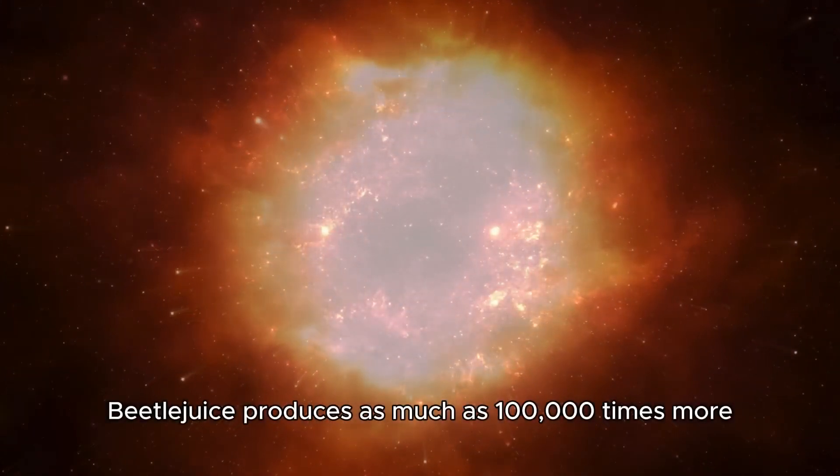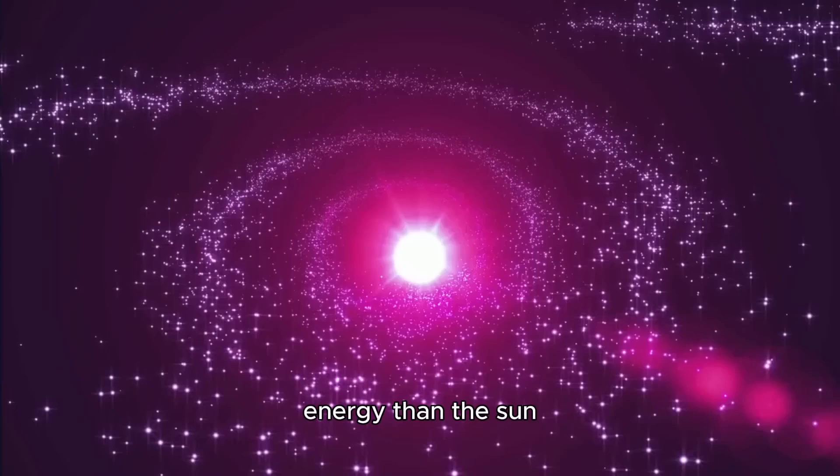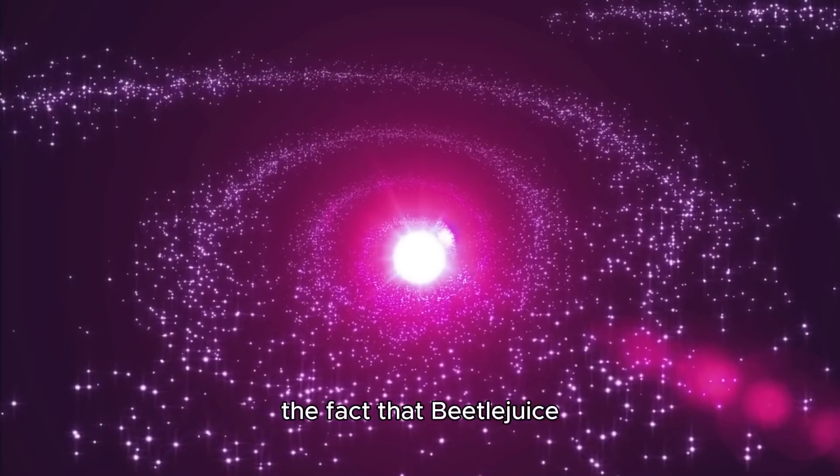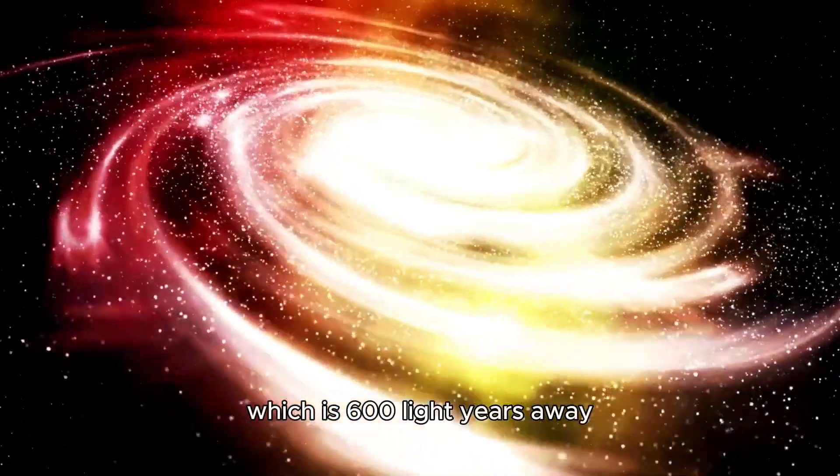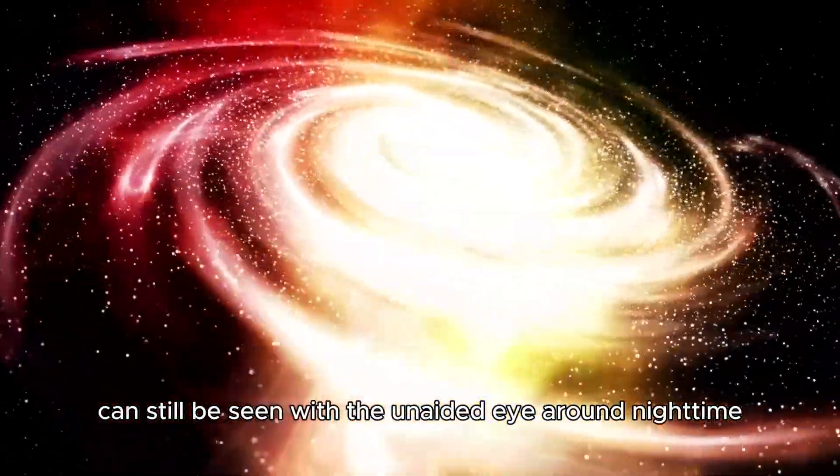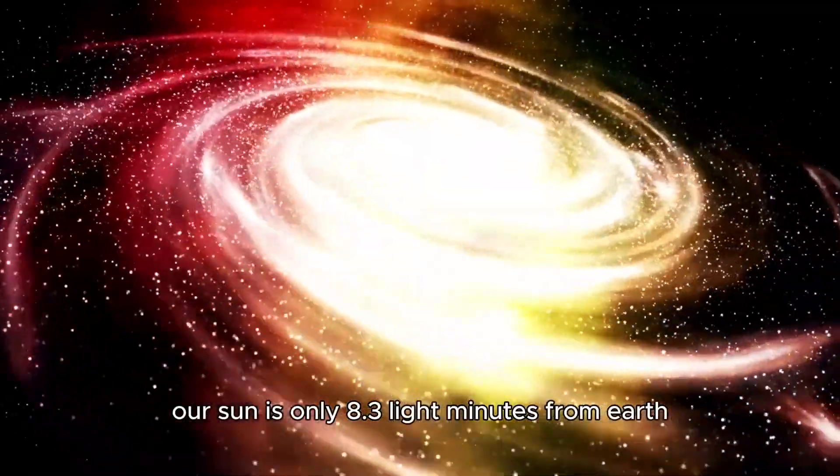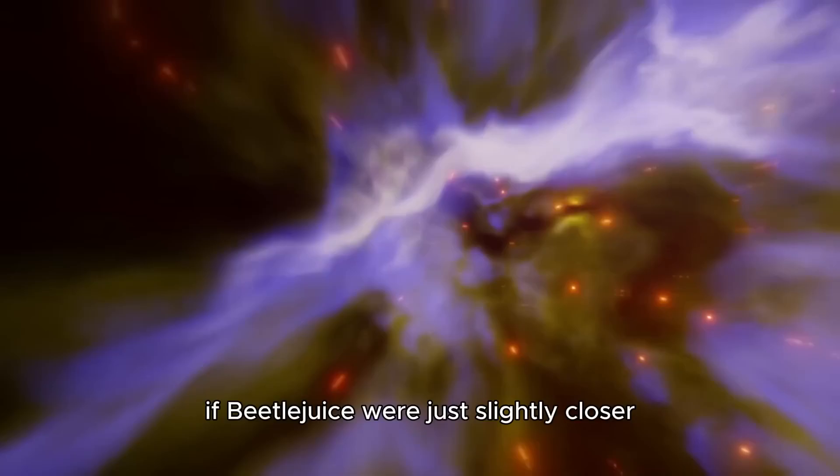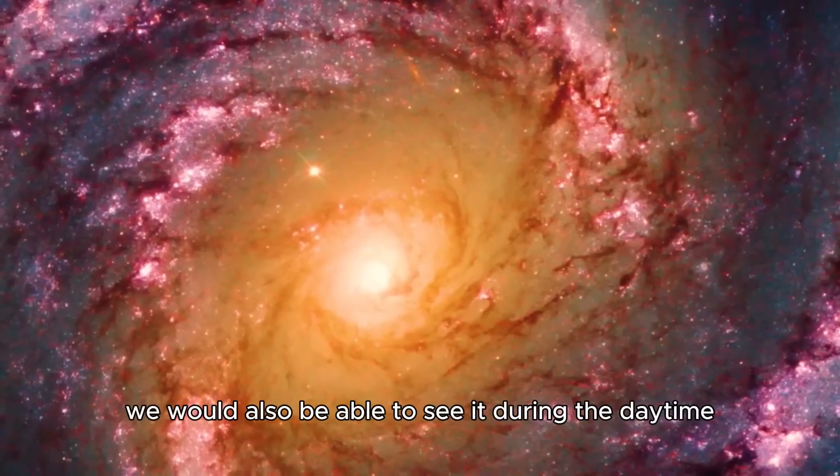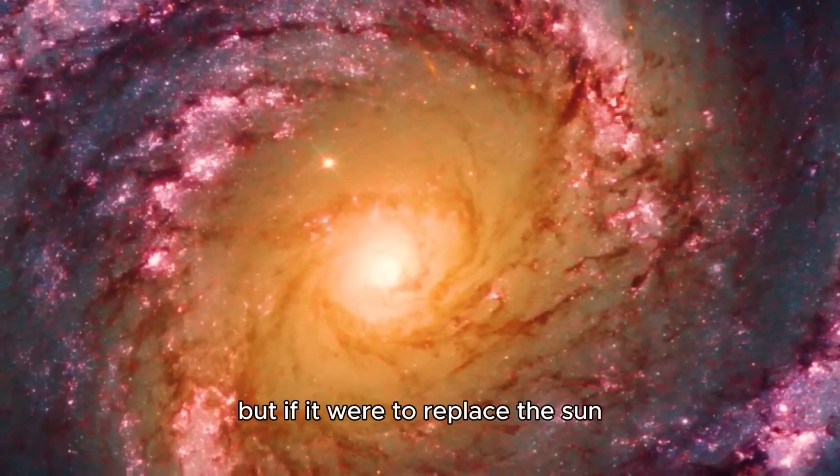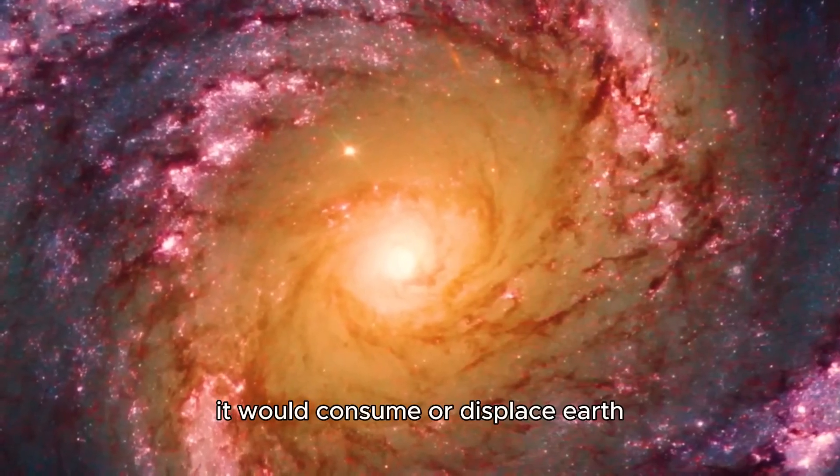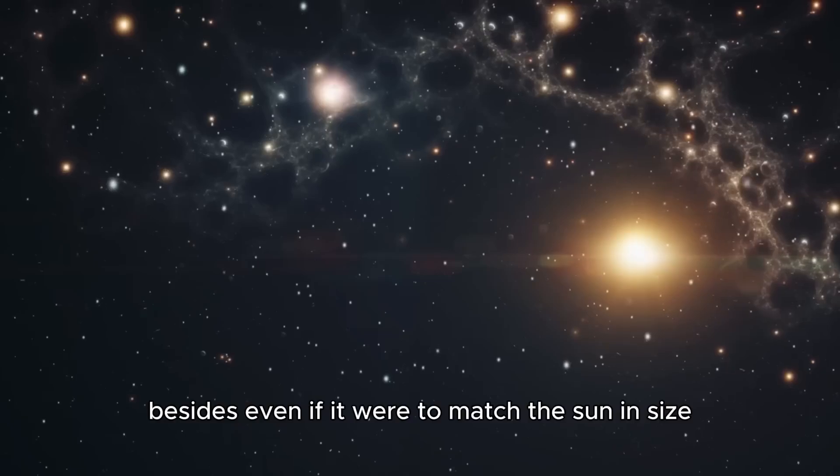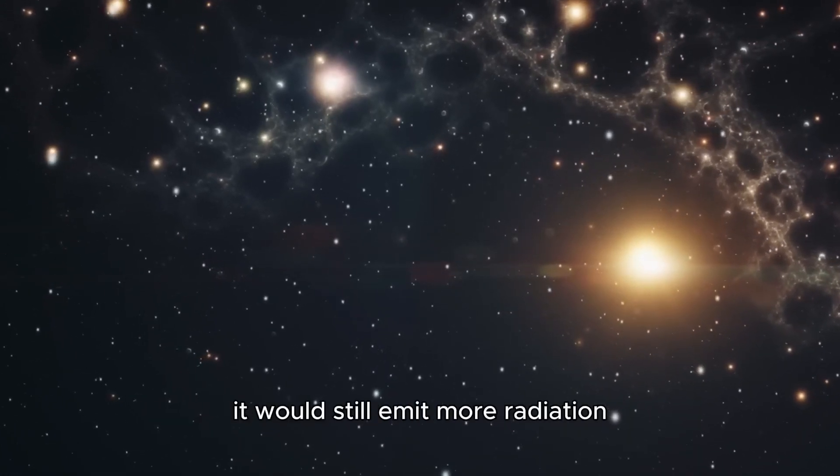Betelgeuse produces as much as 100,000 times more energy than the sun. It would have been a fierce contender to our sun if it weren't so far away. The fact that Betelgeuse, which is 600 light years away, can still be seen with the unaided eye around nighttime is quite striking. Our sun is only 8.3 light minutes from Earth, which is why it's so powerful. If Betelgeuse were just slightly closer, we would also be able to see it during the daytime. But if it were to replace the sun, it would consume or displace Earth and the other four planets near it because of its gigantic size.